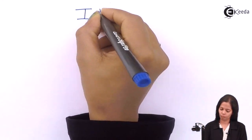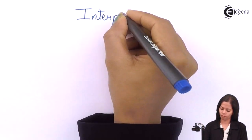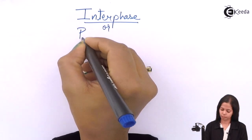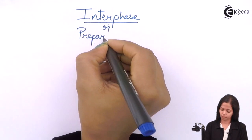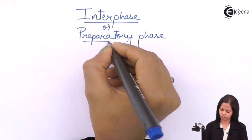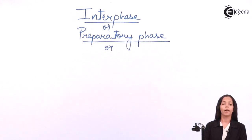Now we are going to study the major phase of cell cycle, that is interphase. Interphase is also called as preparatory phase, and it is also called as intermitotic phase.